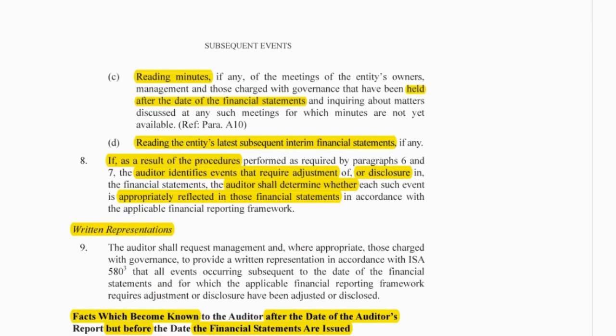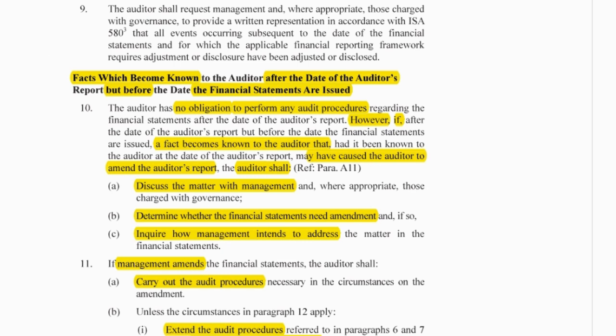We need to read minutes of meetings held after the date to see if anything important has taken place, and review the latest interim financial statements for the next period, because they will show what has actually happened in that time. If we identify any such events, we need to make sure they've been accounted for correctly and get written representation from management that they have accounted for it correctly.